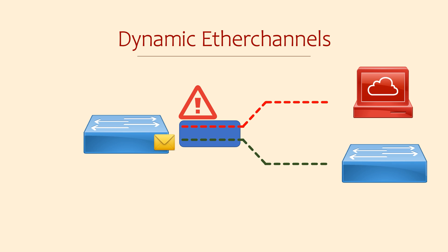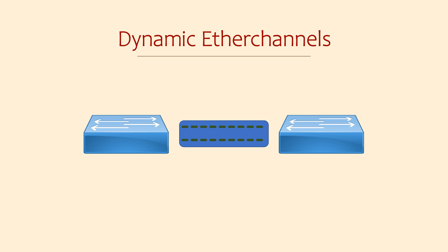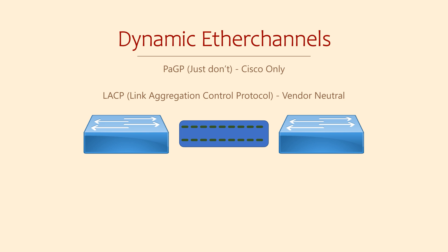Cisco supports two types of dynamic EtherChannel — that is, two different protocols we can use to exchange messages over the EtherChannel. These are called LACP and PAGP. PAGP is an old Cisco-only protocol and it's rarely used anymore, so we're not going to look at it in any detail. Instead, we're going to focus on LACP. LACP was originally part of the 802.3AD standard, then moved into the 802.3AX standard. This makes it vendor neutral, so we can connect other vendors' switches to our Cisco switches.